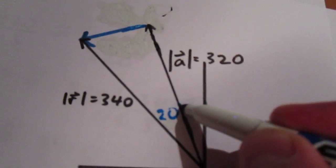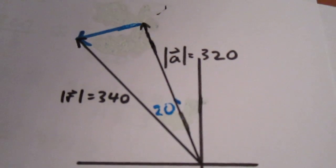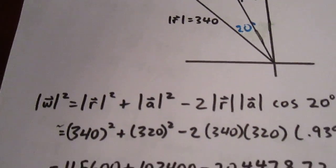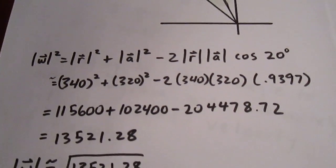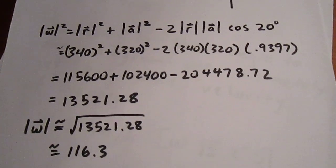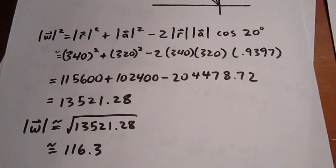From here, it's relatively straightforward for us to calculate the magnitude of the wind's velocity. We simply use the cosine law. And we get that the wind's velocity has a magnitude of approximately 116.3 kilometers per hour.